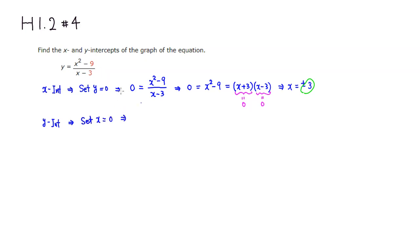So left-hand side is y, and then we plug in 0 for x. So you have 0 squared minus 9. So you can see that the zeros don't do anything. So it's negative 9 divided by negative 3 is positive 3. So y-intercept is positive 3.